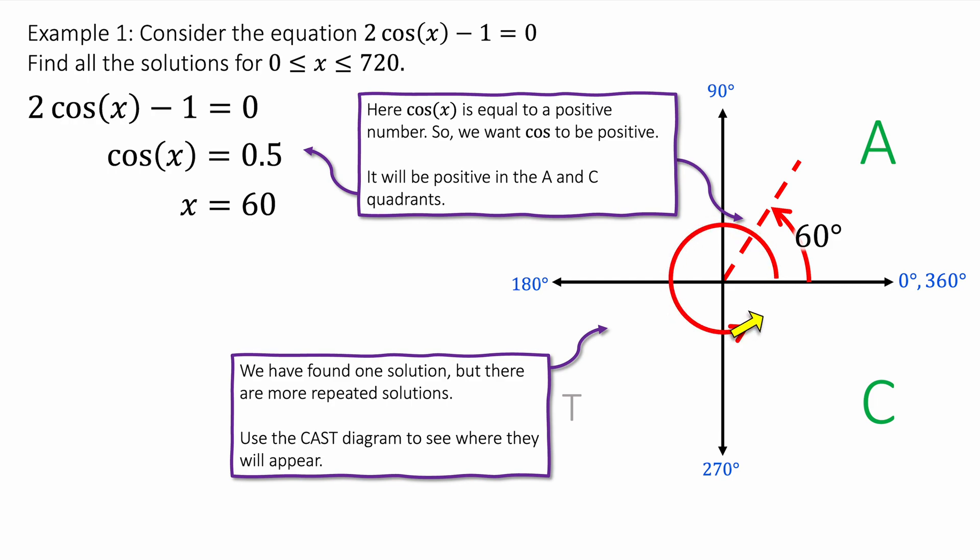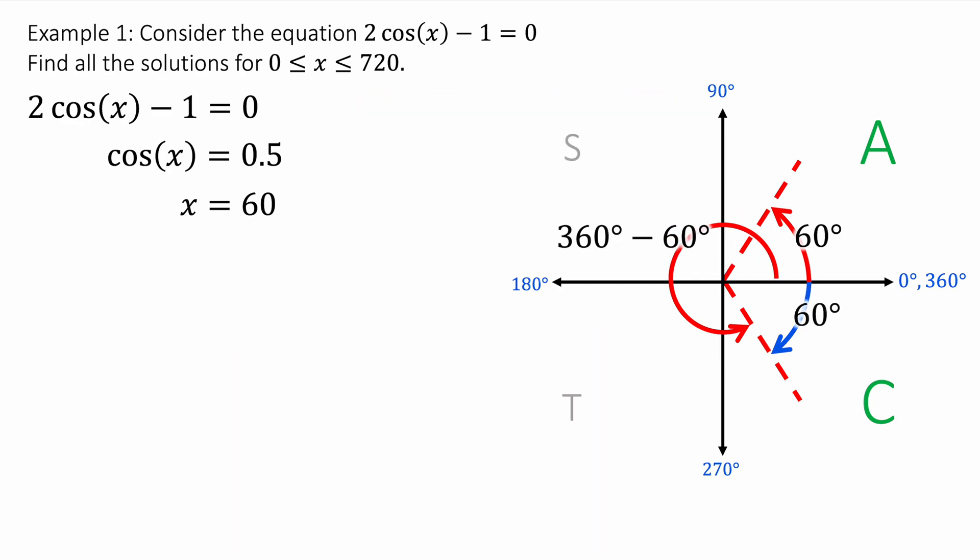And it looks like this: We go all the way around the circle until we get to this other angle here. And the other angle is just the 60 degrees reflected downwards on the horizontal axis. And so we go around. We get 360 minus 60 degrees is 300. The next solution is at x = 300 degrees.